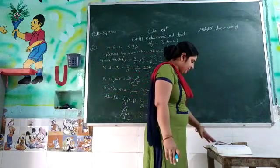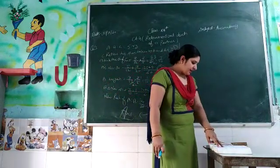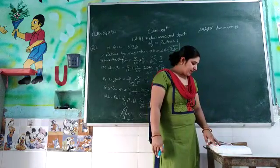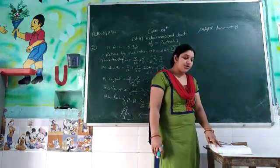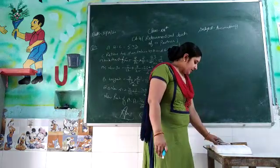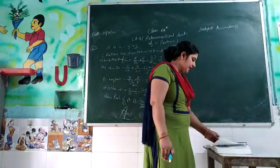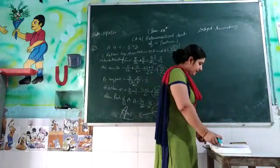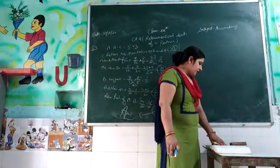Next question: A, B, C's ratio is 1 by 4, 2 by 5, and 7 by 20. B retires and B's share is taken by A and C in the ratio of 1:2. This is the same type of question as question number 4. Question number 5 and question number 6, you will do yourself.